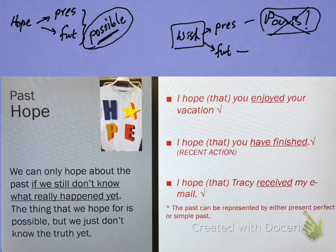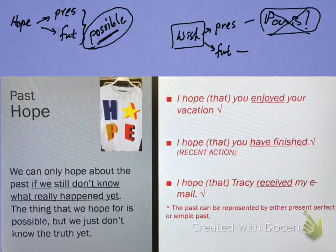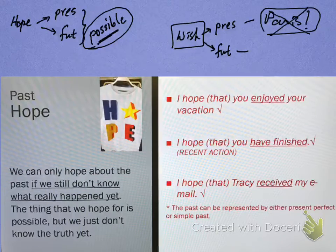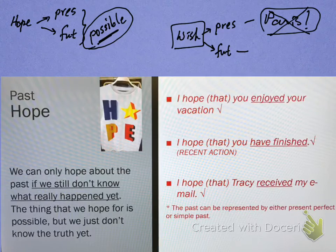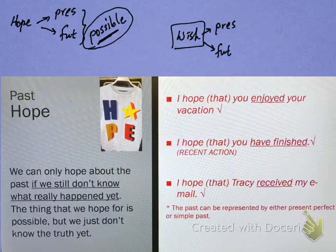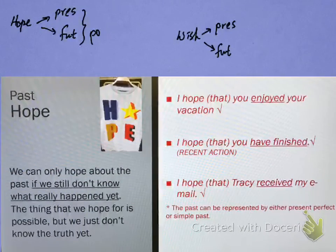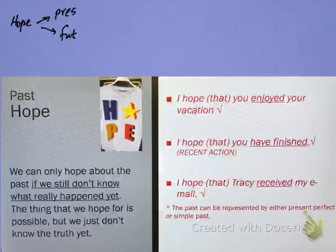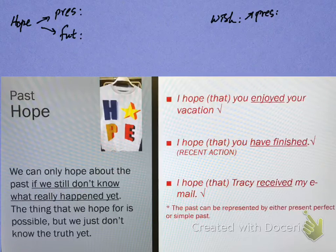So that's hope and wish in the present and future. If you need to review that in more detail, head back to the other tutorial. But let's continue with past hopes and past wishes. These ones I think are fairly straightforward, but let's just go through what's here. When we talk about a past hope, we can only hope about the past if we don't know what's happened yet.